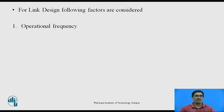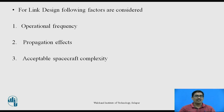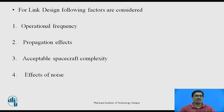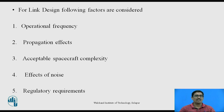First, operational frequency — if we use the frequency as low as possible, then the cost will decrease. Second, propagation effects — keep these as low as possible in the design. Third, acceptable spacecraft complexity — as low as possible. Fourth, effects of noise — as noise varies less, that will be more effective. And the last one is regulatory requirements.